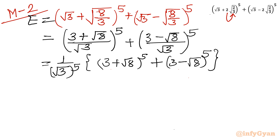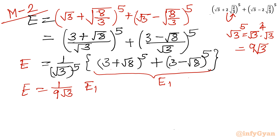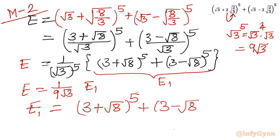Let's call this bracket E1. Our expression E equals (1/√3⁵) × E1. Since √3⁵ = √3⁴ × √3 = 9√3, the denominator is 9√3. So E = E1/(9√3). E1 = (3 + √8)⁵ + (3 − √8)⁵.